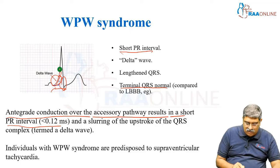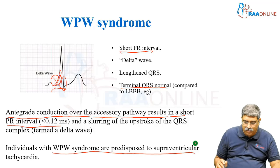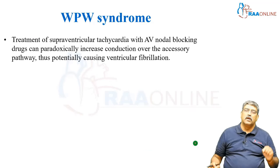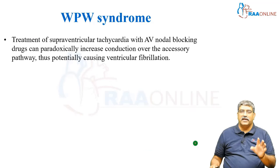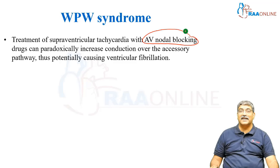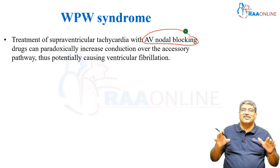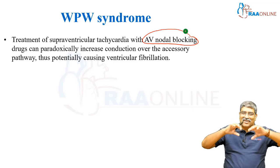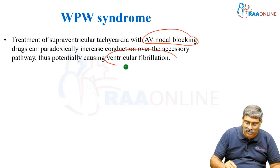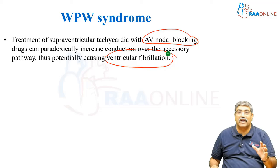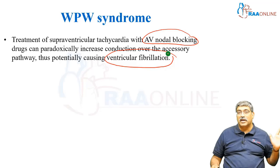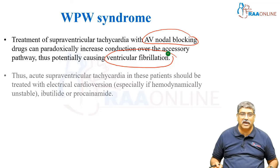Individuals with WPW syndrome are predisposed to supraventricular arrhythmias. If you treat the supraventricular tachycardia with an AV nodal blocking drug, it paradoxically increases the conduction across the accessory pathway of Kent and can cause ventricular fibrillation. So you have to be very careful while giving AV nodal block in WPW syndrome — it might progress to ventricular fibrillation.